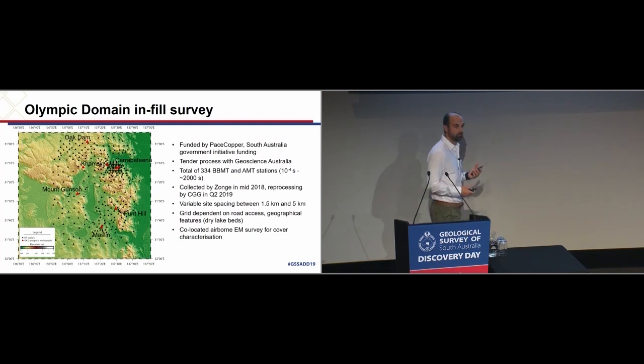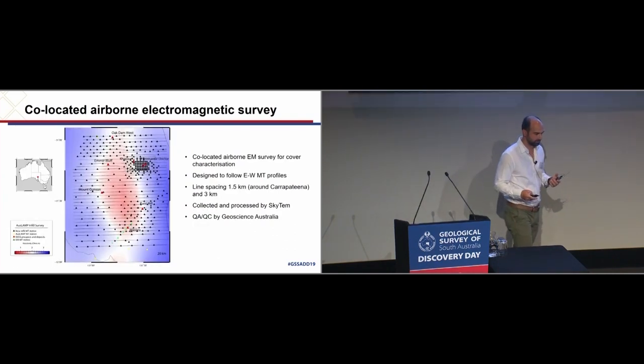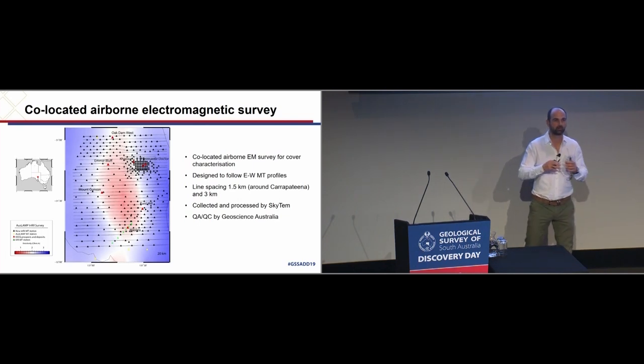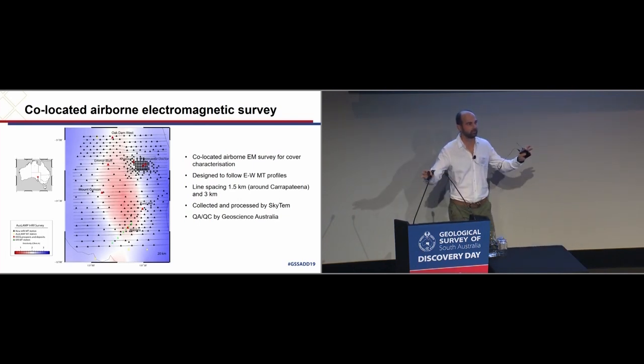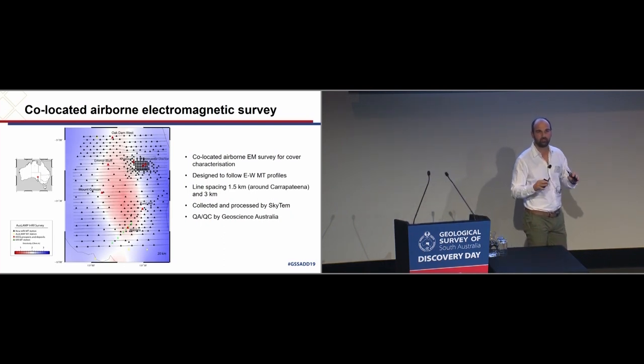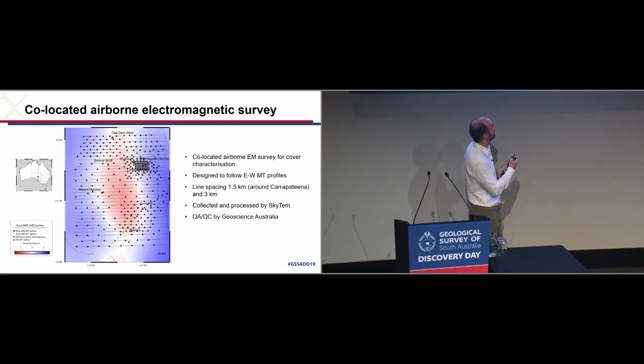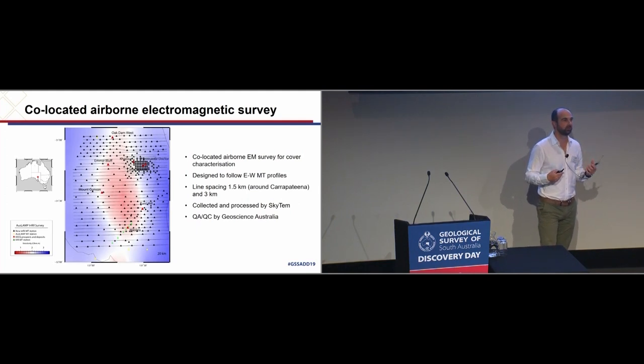We also co-located an airborne EM survey across it that's supposed to complement the data we're collecting with MT. The idea is that we have a continuous seamless EM dataset from the very big scale OSLAMP collected every 50 kilometers, having an infill MT survey every one and a half and five kilometers, down to airborne EM which samples every meter along these lines. These lines are separated about three kilometers for most part and one and a half across Carapateena to nicely line up with what we see in the MT.